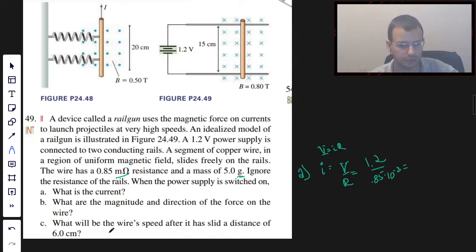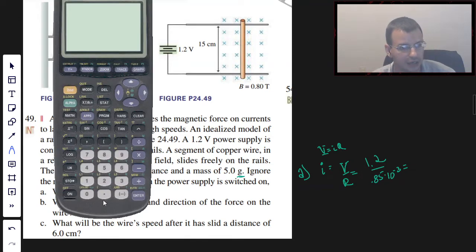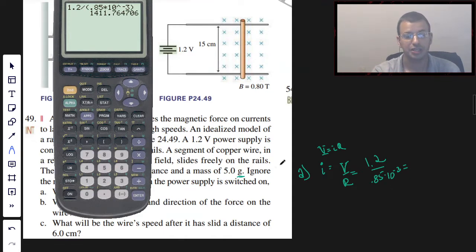And so we're going to go to our calculator. 1.2 divided by quantity 0.85 times 10 to the negative third. I know there's probably an easier way to do it, I don't care. That's a lot of amps.